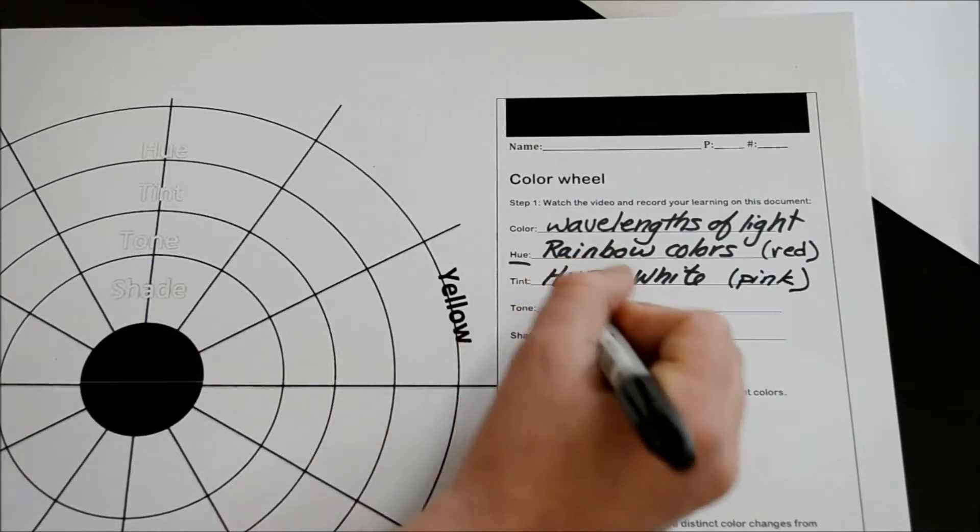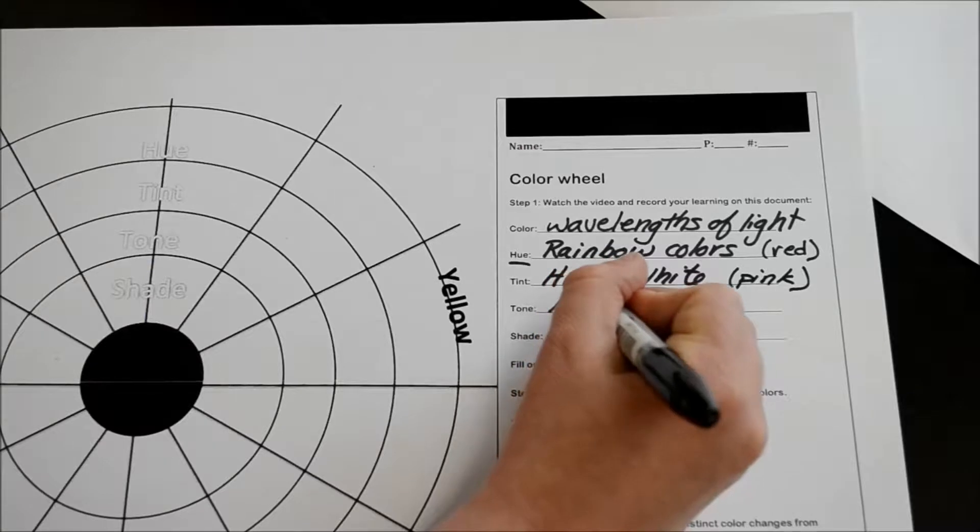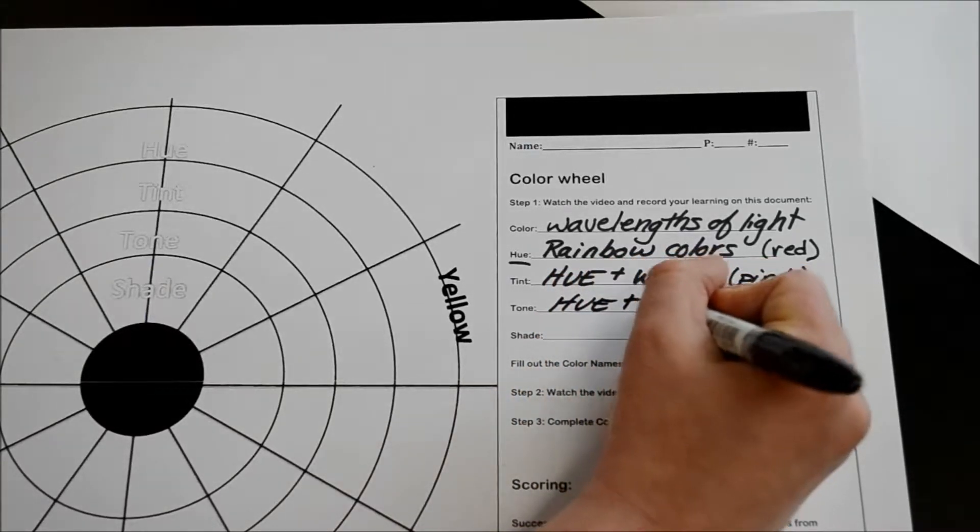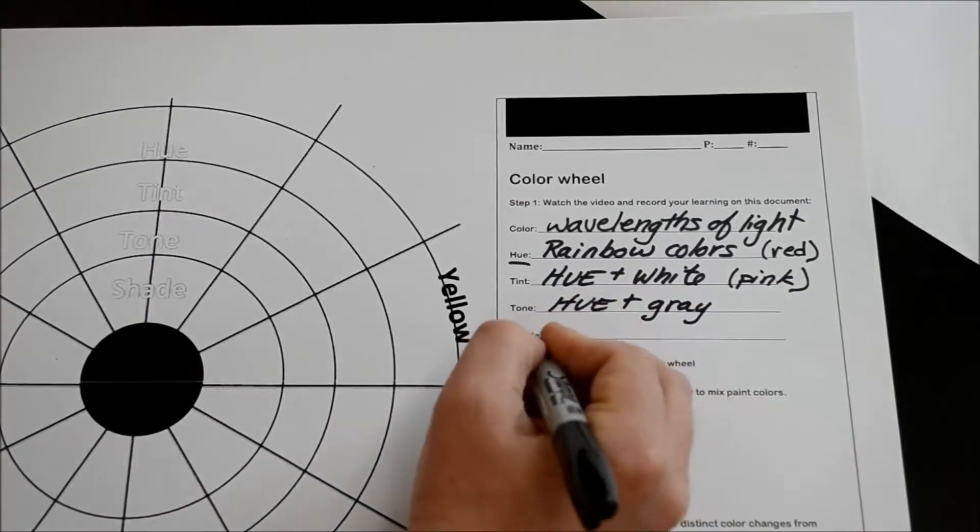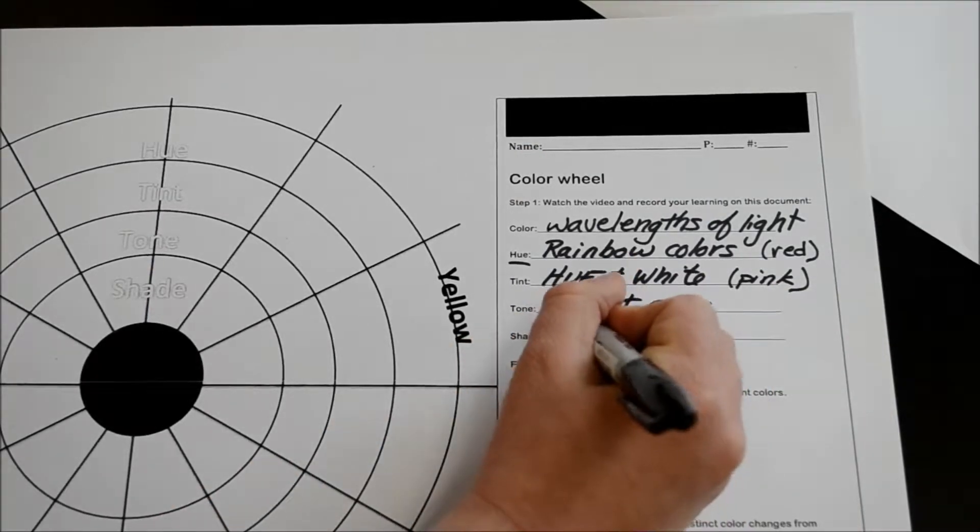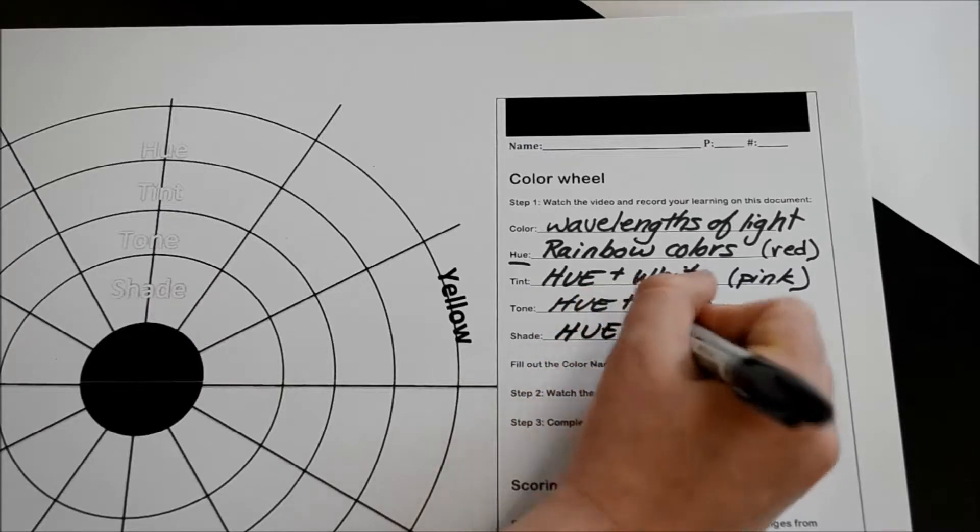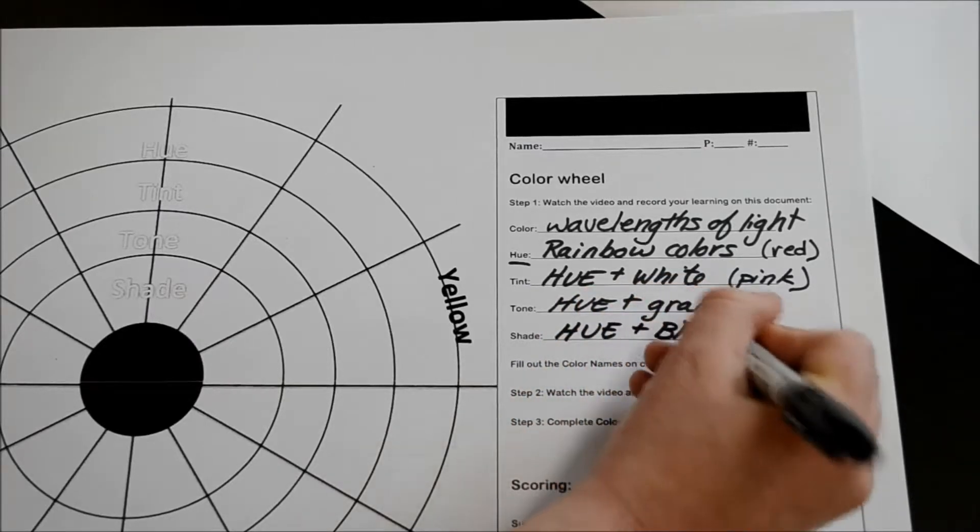A tone is a hue plus gray, and a shade is a hue plus black.